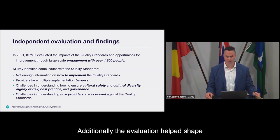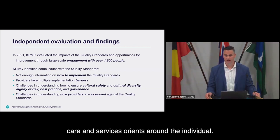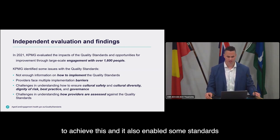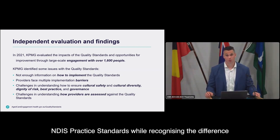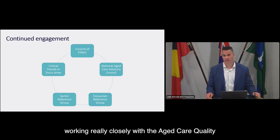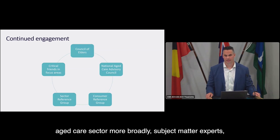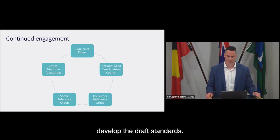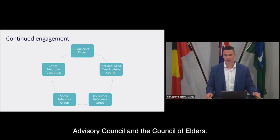The evaluation helped shape the current draft by driving a stronger focus on the older person, ensuring that the design of care and services orients around the individual. It also builds improved clarity around expectations and enables some standards to be turned on and off depending on service type, and enables structural alignment with the NDIS practice standards while recognising the differences between aged care and disability services. To develop the standards, the department has worked closely with the Aged Care Quality and Safety Commission, the Australian Commission on Safety and Quality in Healthcare, older Australians and their representatives, a consumer reference group, a sector reference group, the National Aged Care Advisory Council and the Council of Elders.